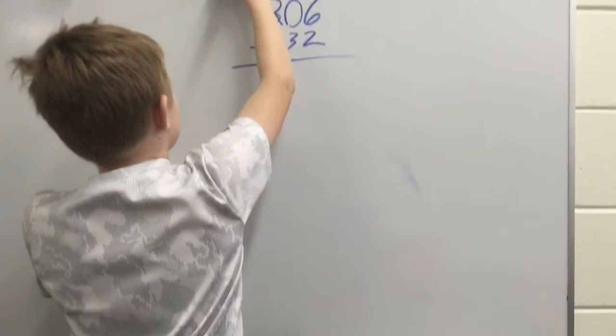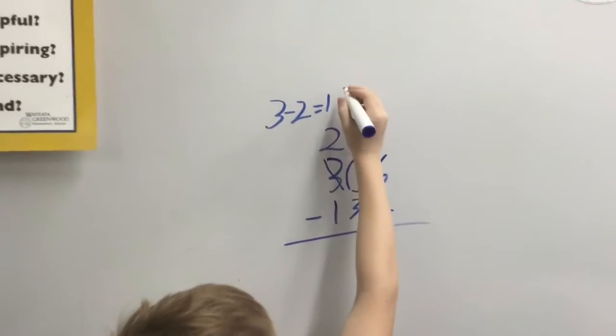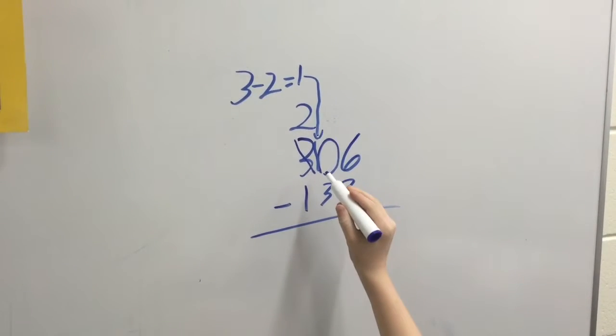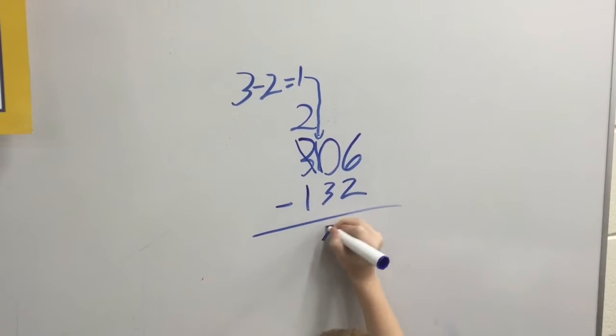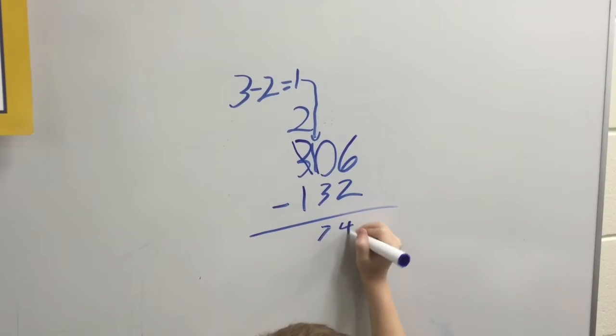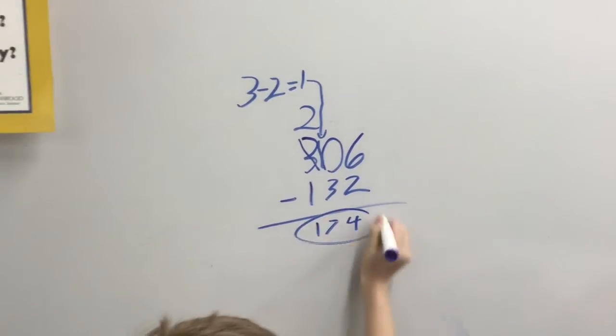Then three minus two equals one, so you take that one and put it right there. The zero becomes a ten. Ten minus three is seven, six minus two is four, and two minus one is one. That's your answer.